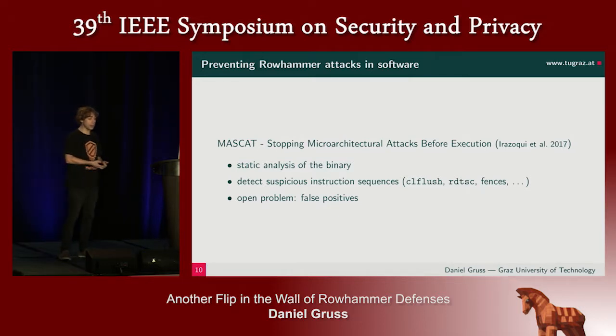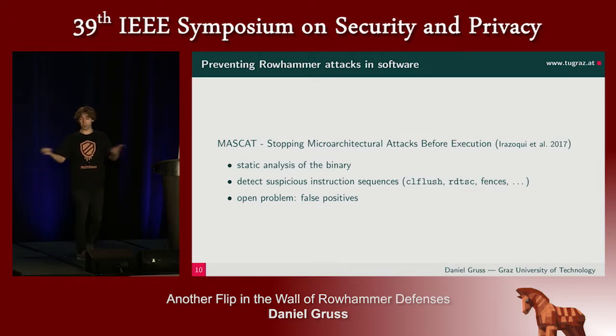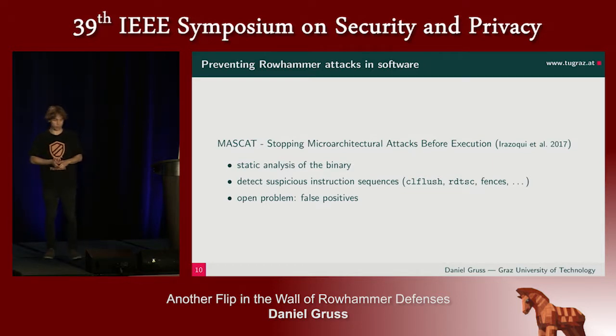Another idea was to detect Rowhammer attacks before they actually happen — for instance, using static analyzers on the binary and finding that there is such attack code. There is, of course, an open problem with false positives. But we will see another problem in a minute.